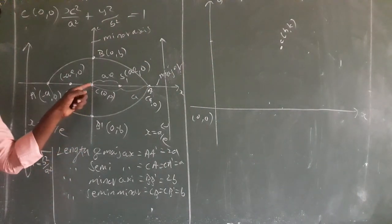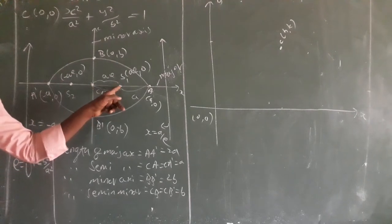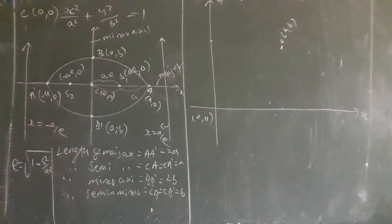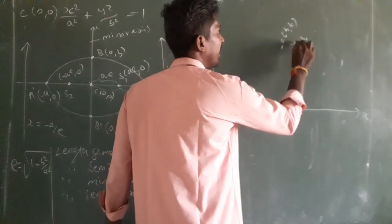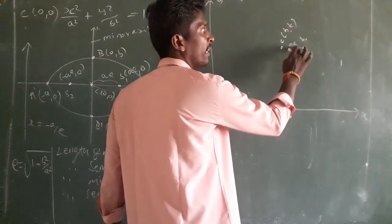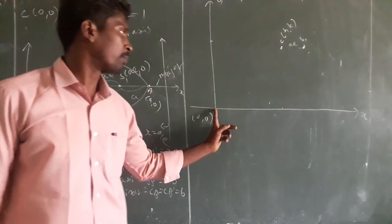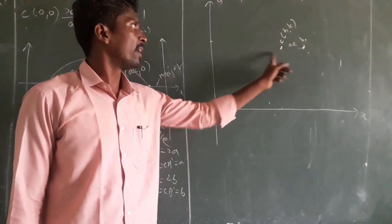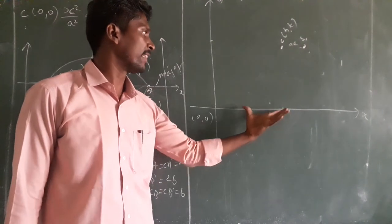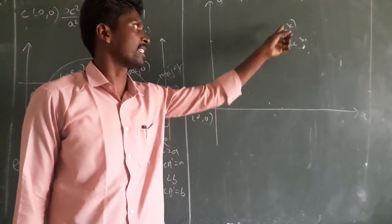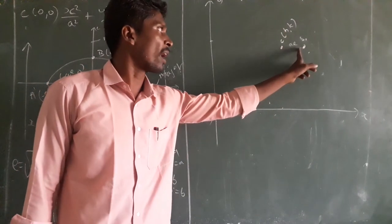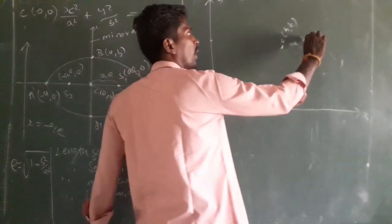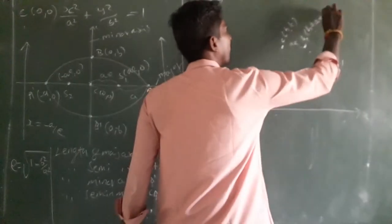The distance from center to focus is AE. So if I mark here focus S1 — center to focus is AE. So on the x-axis, the coordinate of center is h. Then you add AE. So what is focus S1? It is (h plus AE, k). Then center to vertex: the distance is a. So up to here on the x-axis, the coordinate is h, then you add a. The vertex coordinate is (h plus a, k).